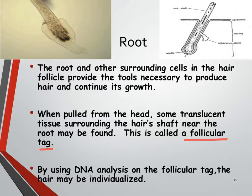We can analyze the follicular tag for DNA and pair that hair to an individual person. Normally, hair is just class evidence — we go based on appearance and color, and can narrow it down to a group of people with the same colored hair, such as redheads or people with dark or blonde hair. But as soon as you attach tissue that we can get DNA from, this hair becomes individual evidence, because I can pinpoint it to a specific person.